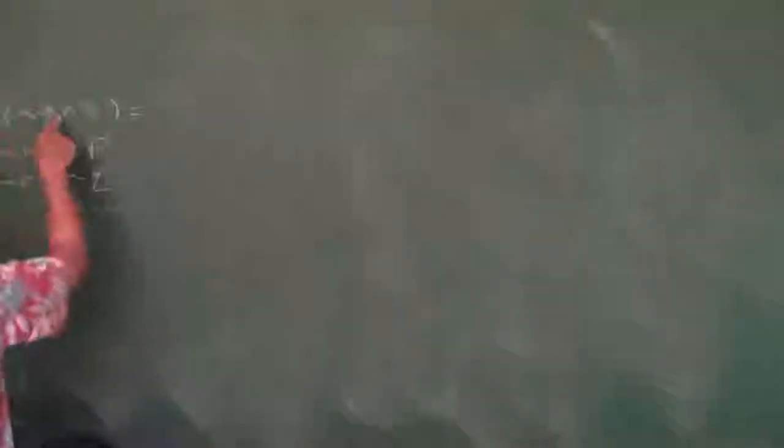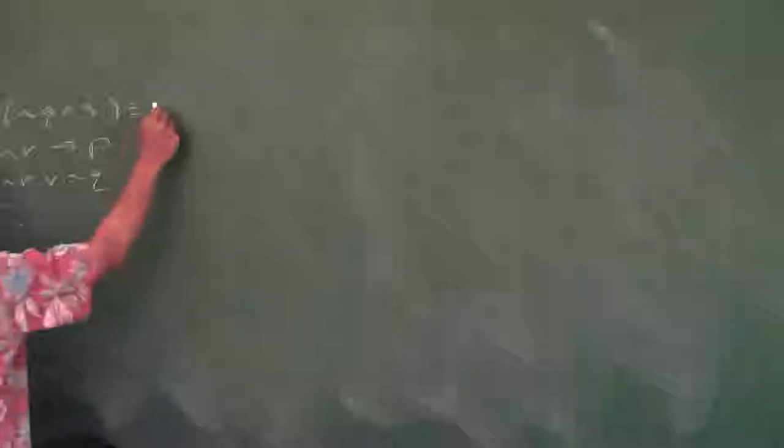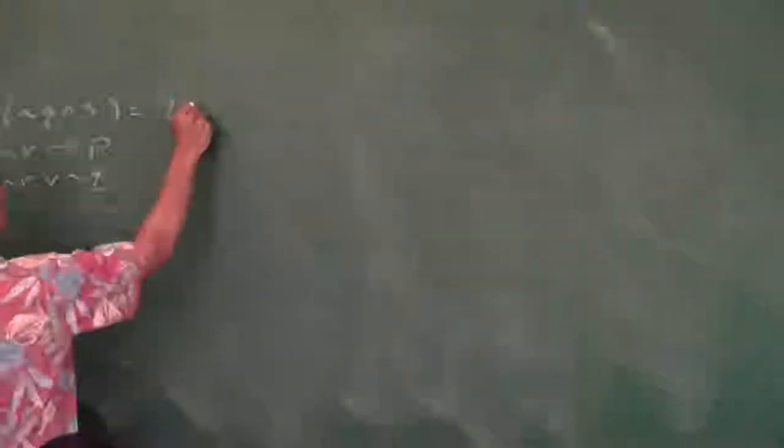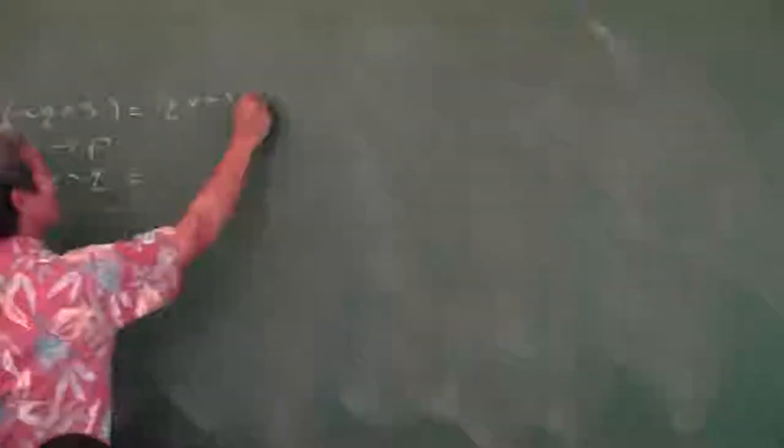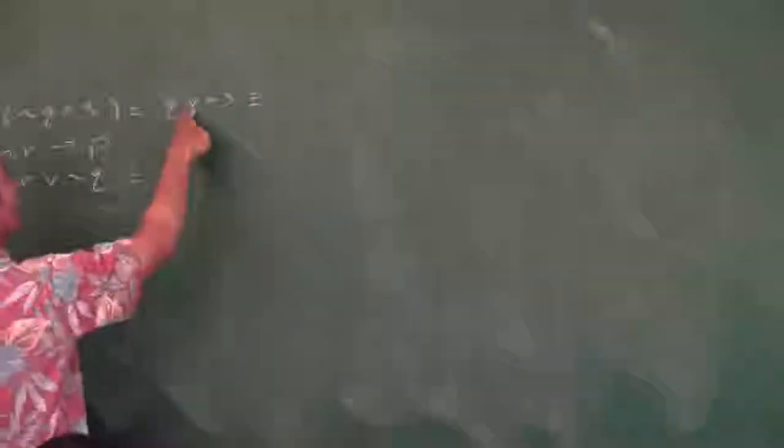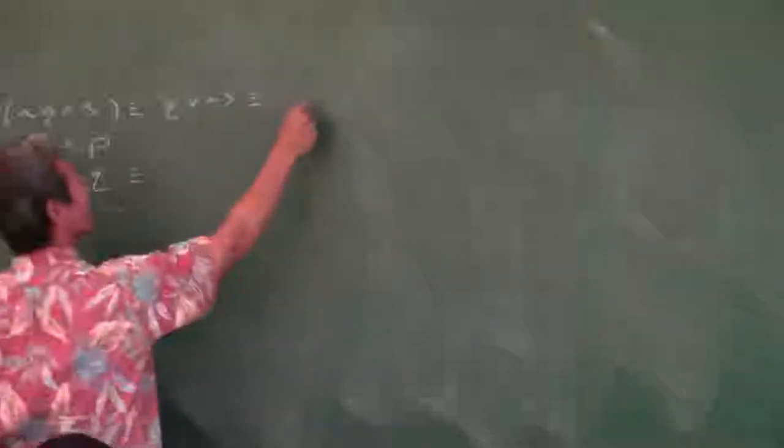So what can we do with this? How do you distribute a negation sign to an AND statement? It's going to be NOT Q or NOT S — that's De Morgan's law. This is already a conditional statement. How do you change an OR statement to a conditional?